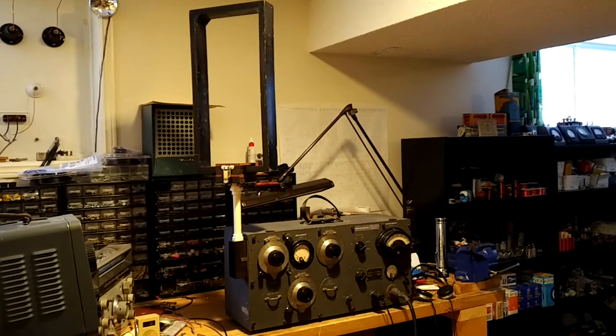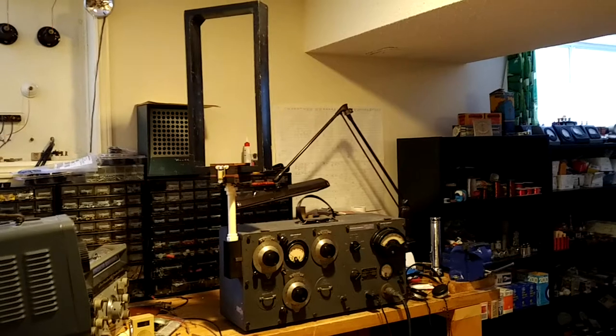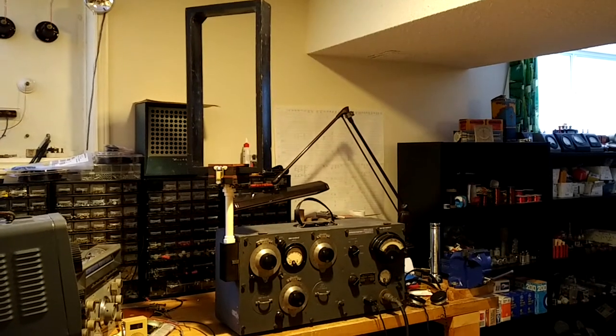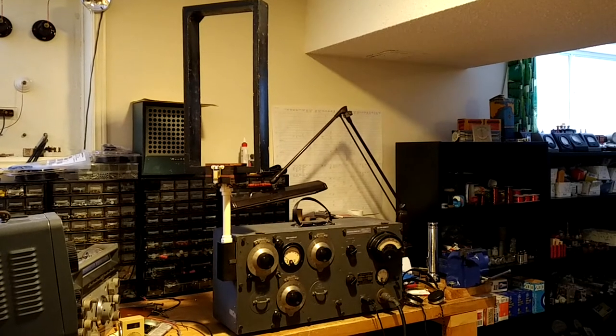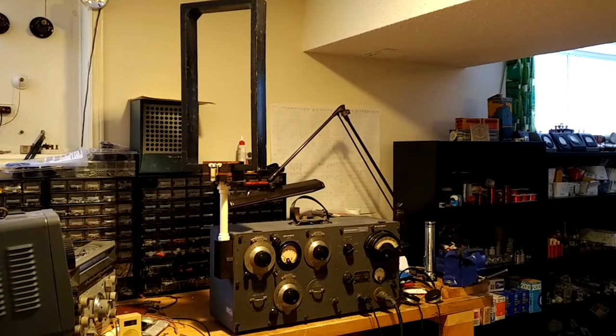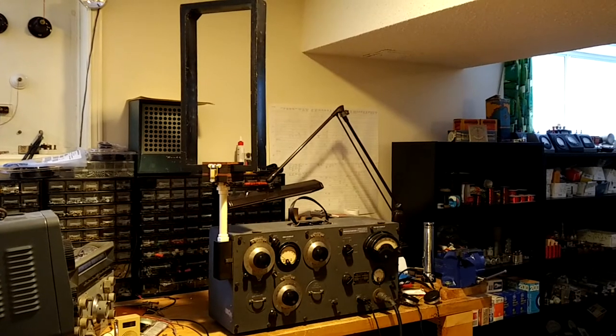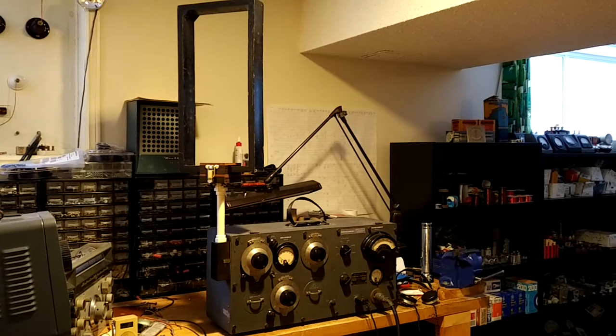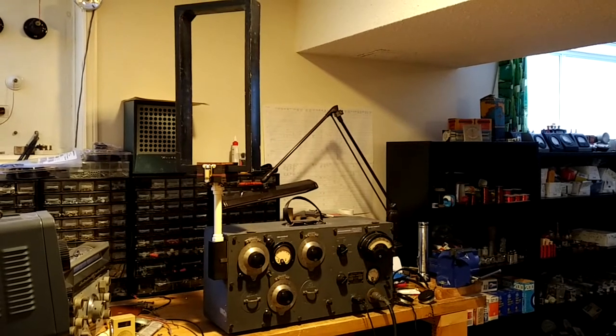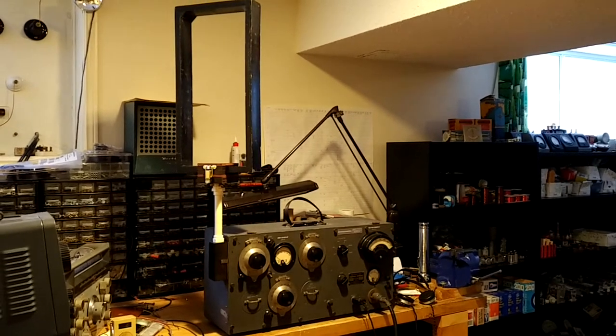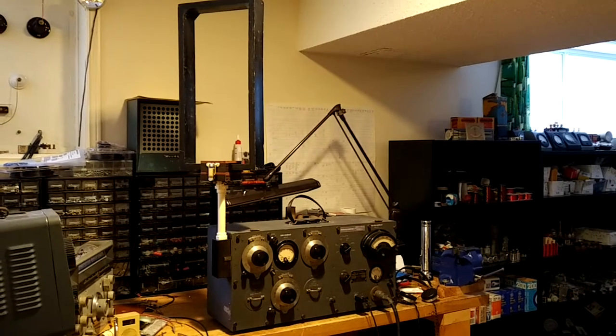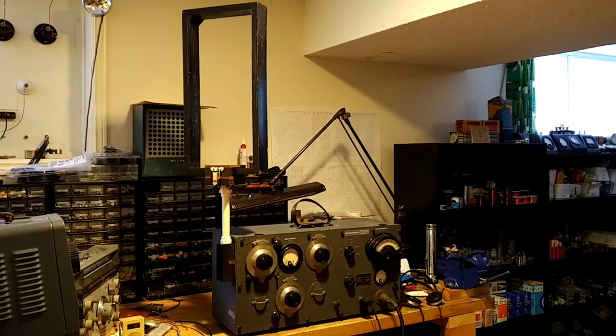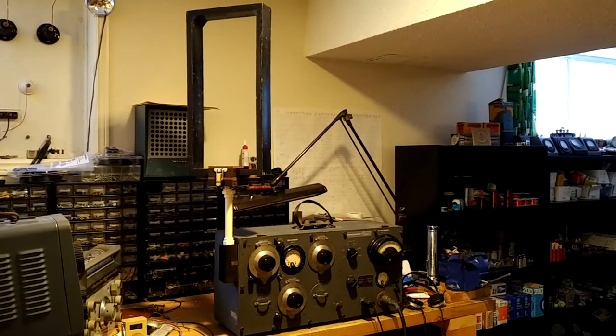This is an RCA TMV-75B field intensity meter. It was used from 1934 to 1940s. In fact, radio station WEAF, the NBC station on 660 kHz at the time, was field-tested and certified using this instrument to verify its antenna radiation pattern and field strengths to meet FCC regulations.